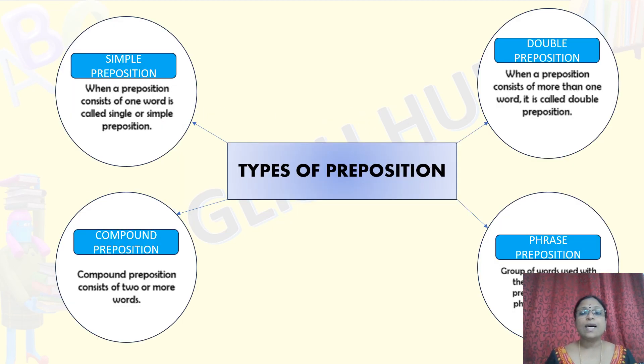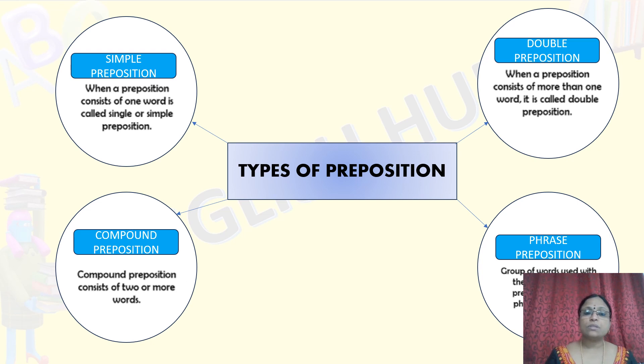Here I have given four types of prepositions. They are simple preposition, double preposition, compound preposition, and phrase preposition.